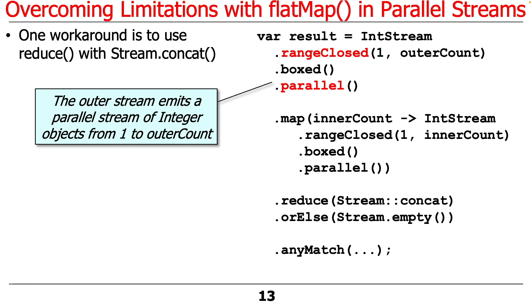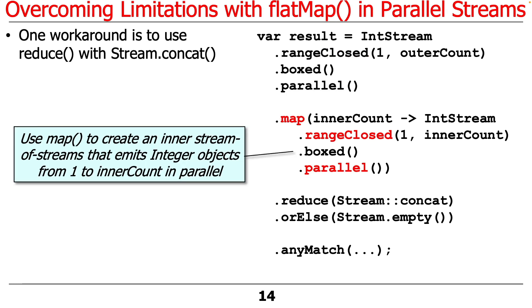So once again, we have an outer stream that emits objects from 1 to outerCount. And then instead of using flatMap, we're going to use map. And map does not have the weird glitch that you have with flatMap. It will indeed run in parallel. And so what we're going to do here is we're going to end up having this inner stream running in parallel.